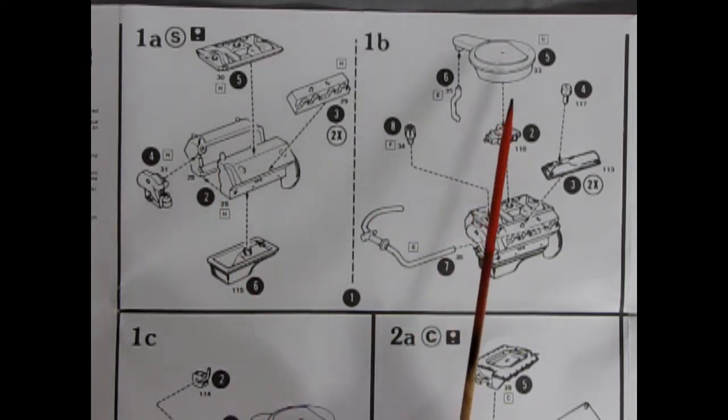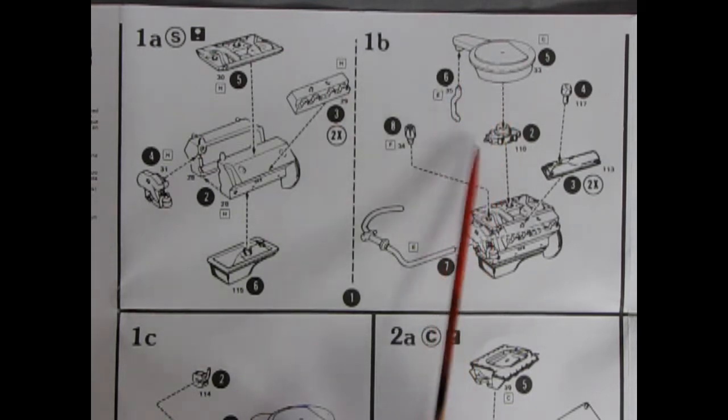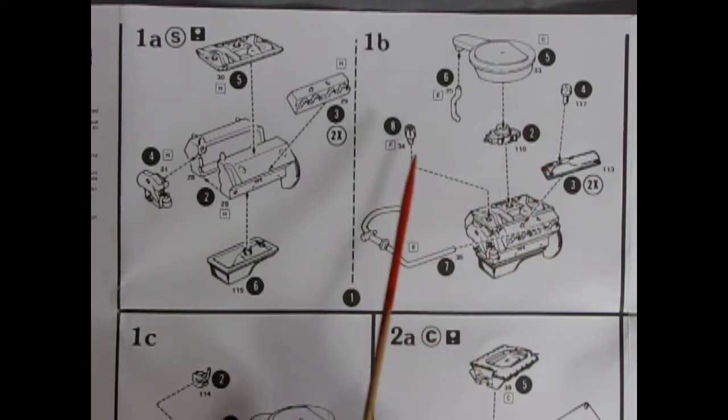And if we move over into panel 1B, you can see our air cleaner going down here with the tube as well as our carburetor, the valve covers, the breathers, and the distributor.